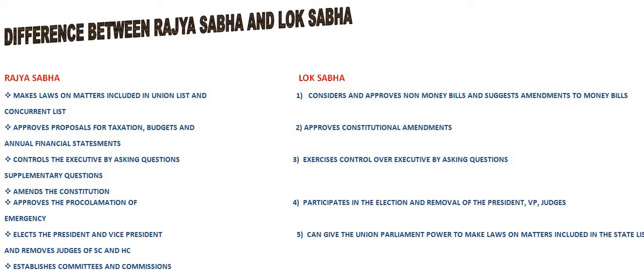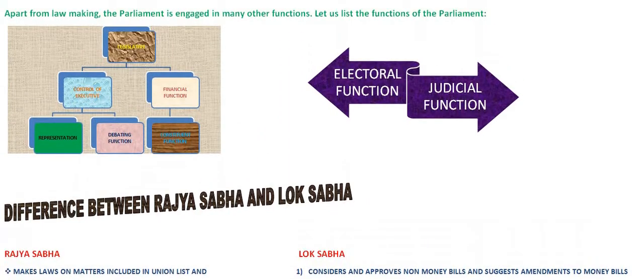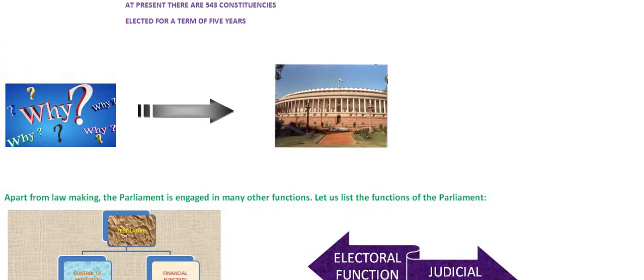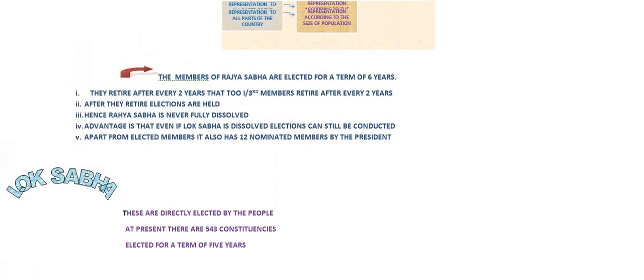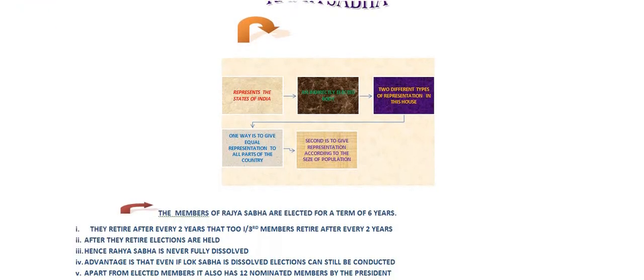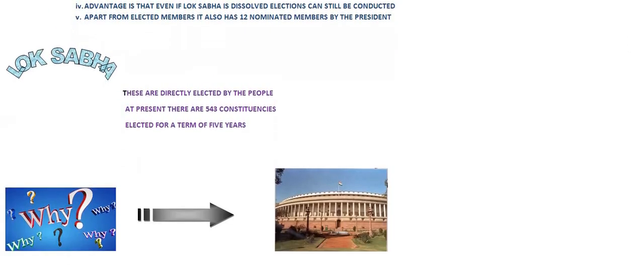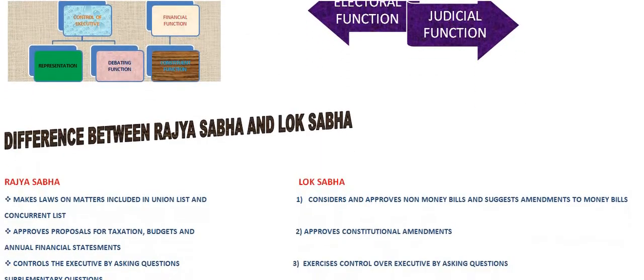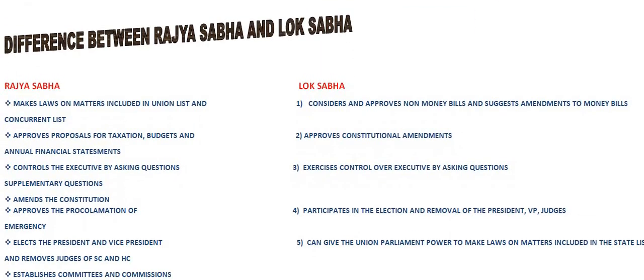Till now, we have already understood why we need a legislature, what are the different functions of the legislature, the two houses and the function of each one, how the appointment works — these are all things we have already understood. Next up, the important topic related to this chapter is the difference between Rajya Sabha and Lok Sabha — the difference in functions, composition, and number of members. I have already explained all these compositions when we studied about Rajya Sabha and Lok Sabha.